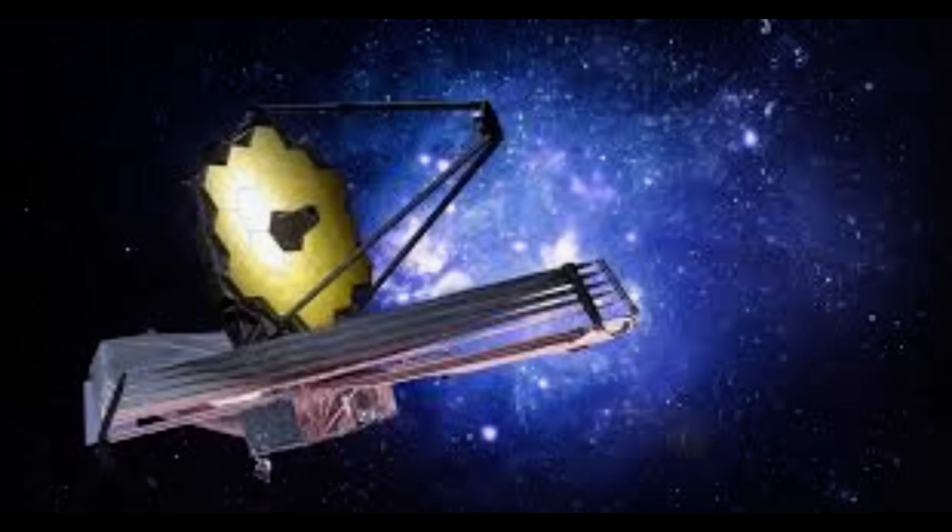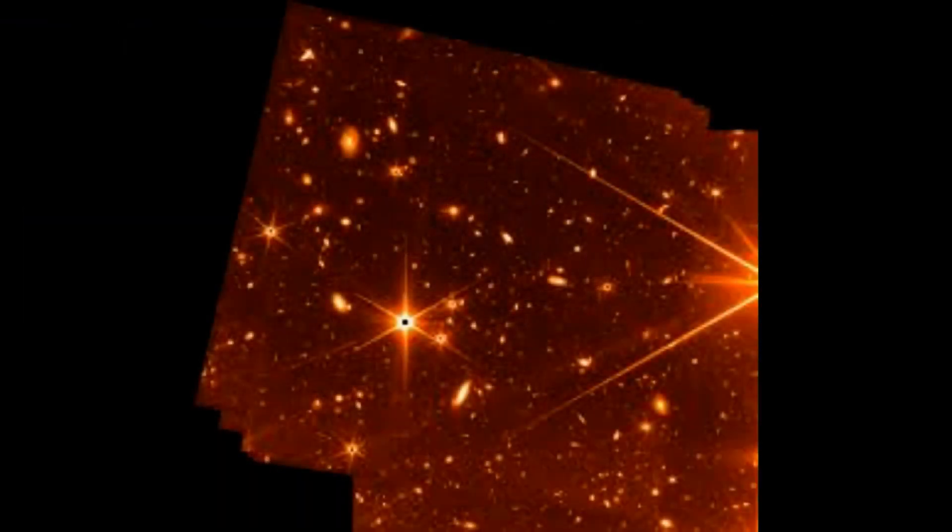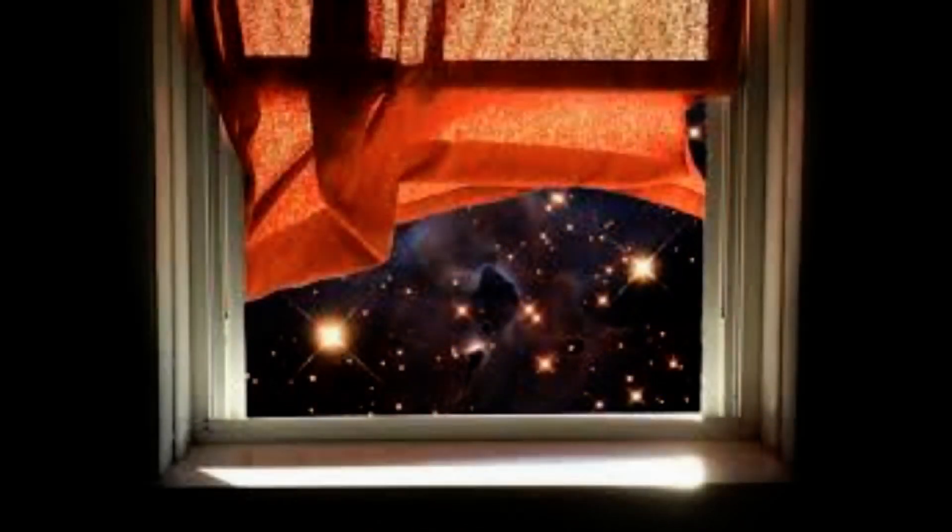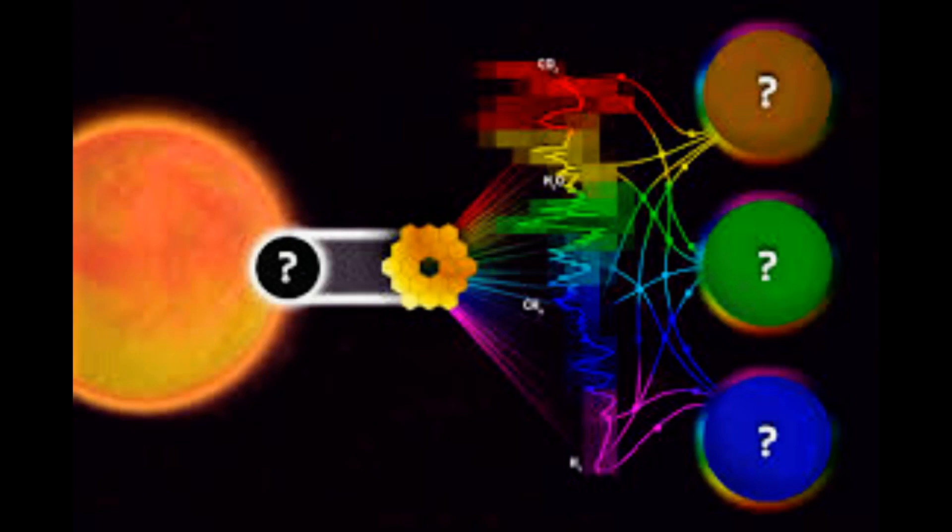This is actually not a thermal effect at Hellas, explains the principal investigator, Geronimo Villanueva of NASA's Goddard Space Flight Center, who designed these Webb observations. The Hellas Basin is a lower altitude and thus experiences higher air pressure. That higher pressure leads to a suppression of the thermal emission at this particular wavelength range due to an effect called pressure broadening. It will be very interesting to tease apart these competing effects in these data.